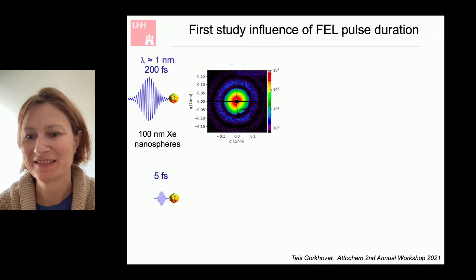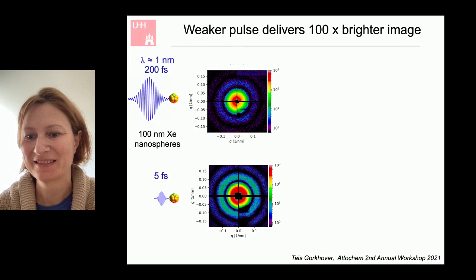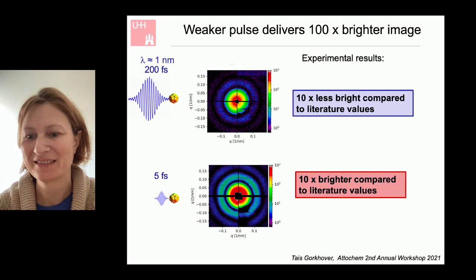Five-femtosecond pulses contain ten times fewer photons than 200-femtosecond pulses. We expected ten times less bright images, but were extremely surprised to find that the images are actually one hundred times brighter. The higher scattering angles truly start to emerge, meaning the short-pulse images genuinely have better resolution than the long-pulse images. The detailed analysis message is that the 200-femtosecond images are ten times less bright than literature values, while five-femtosecond exposures are ten times brighter than literature values.